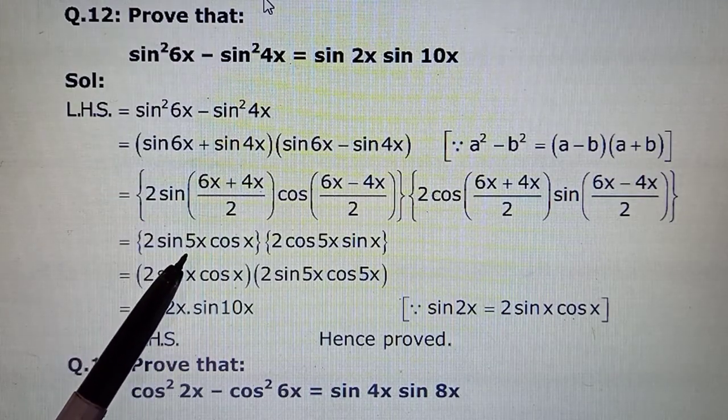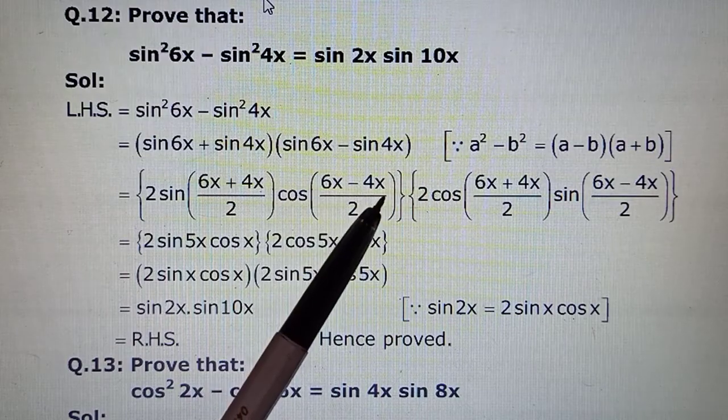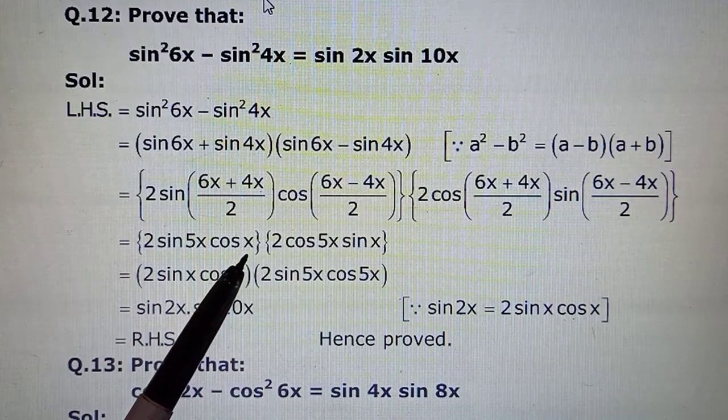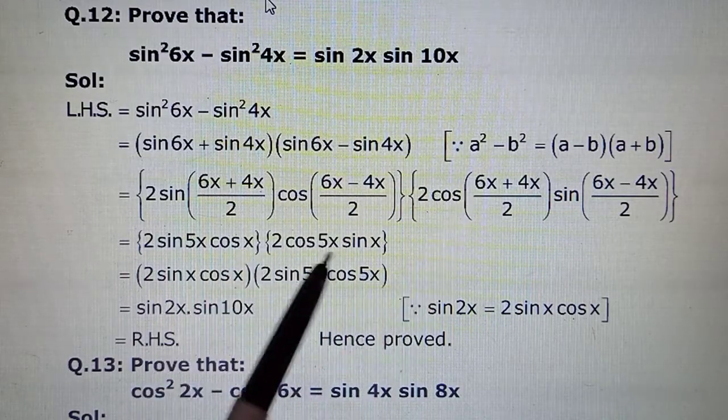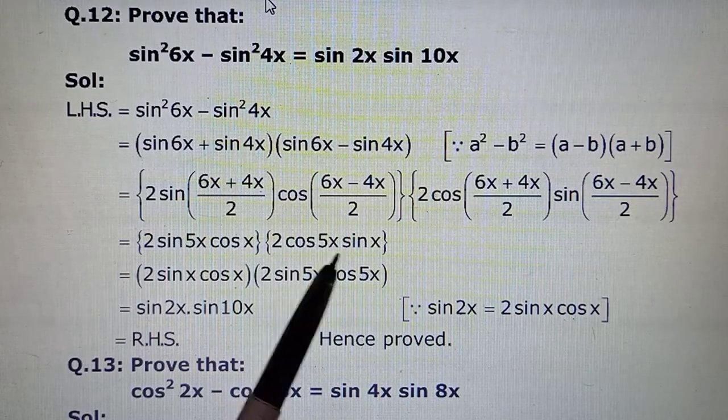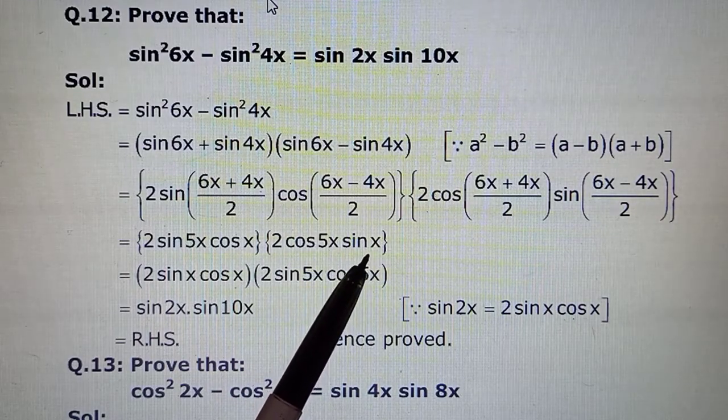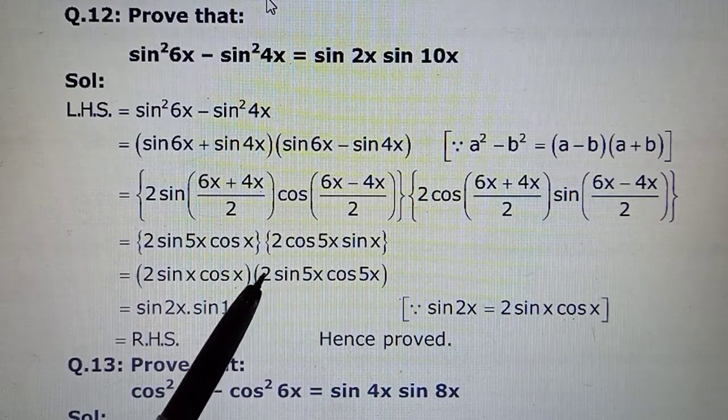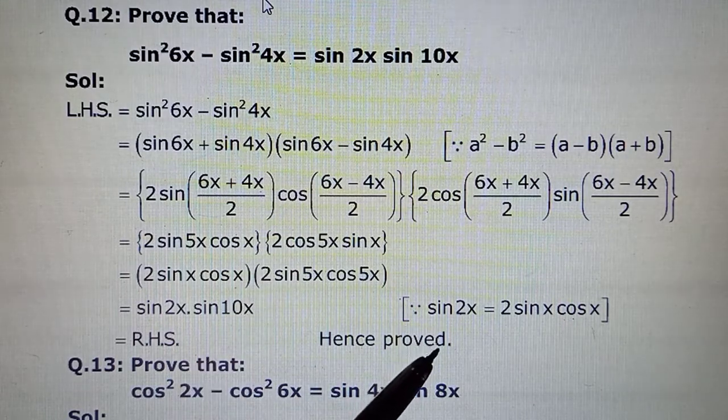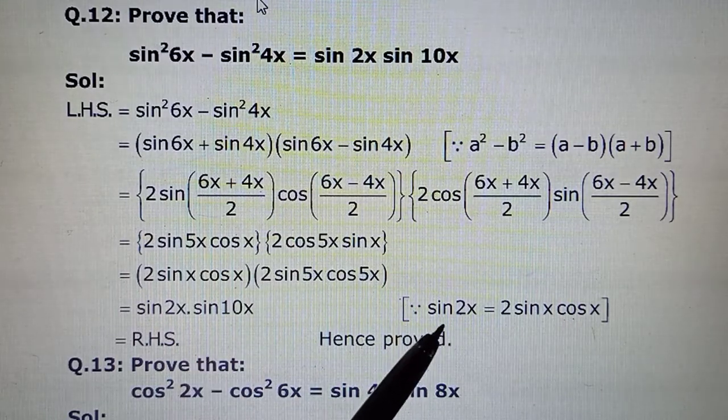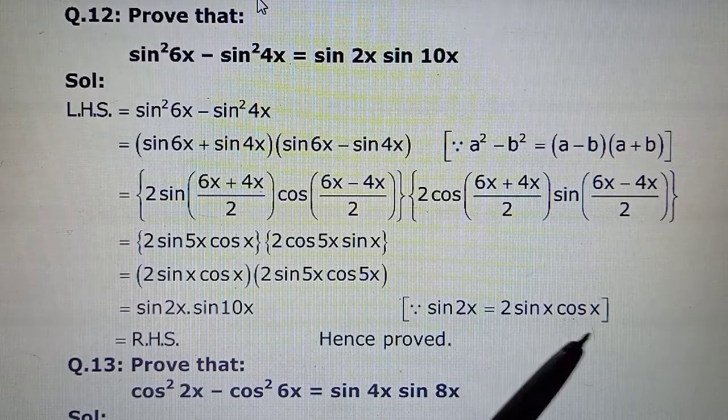So this will give you 2 sin 10x/2 that becomes 5x, 6x - 4x, 2x/2 which becomes cos x. And here likewise, so it will be cos 5x and then now sin x.